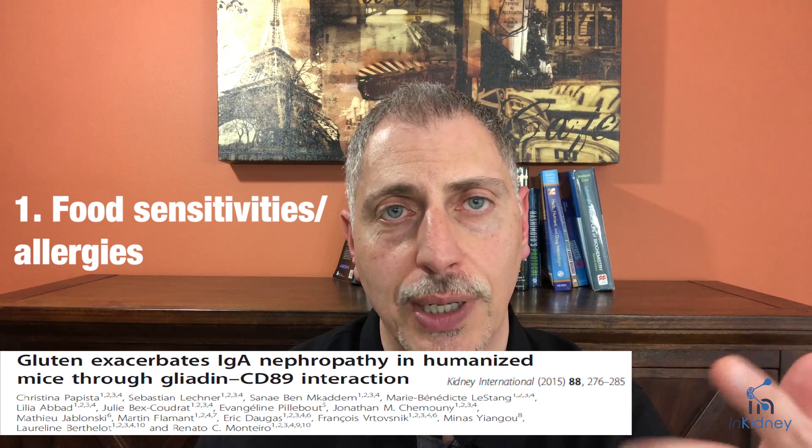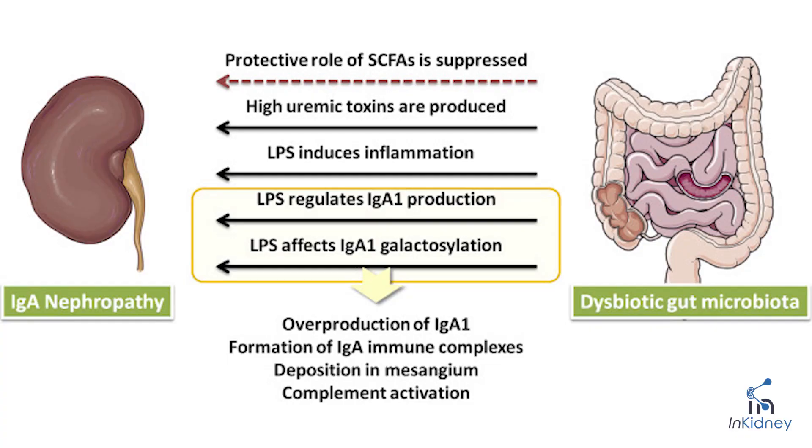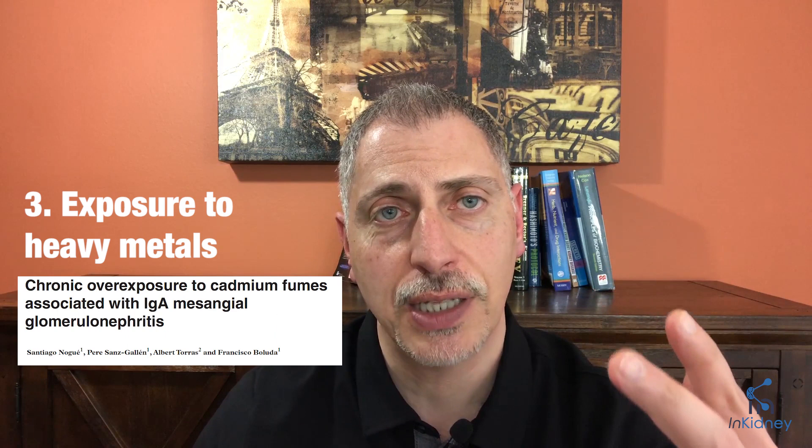When you talk about the triggers, there are three that come to mind. One: food sensitivities — this has been well established since the 80s that gluten, soy, and lectin have been associated with abnormal production of IgA and leading to IgA nephropathy. Number two: there's also microbial imbalance in the gut — dysbiosis has been studied and associated with development of abnormal IgA and leading to IgA nephropathy. And third, heavy toxic metals such as cadmium have been linked to the development of IgA nephropathy.